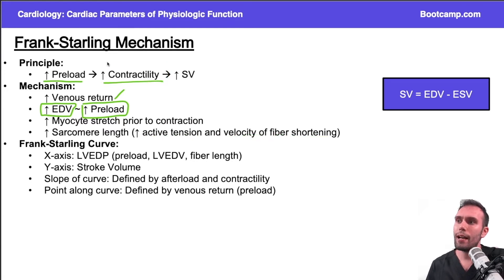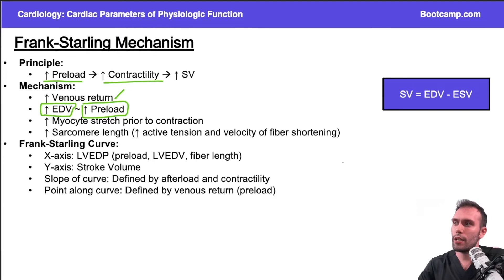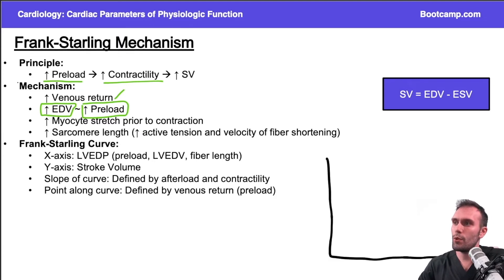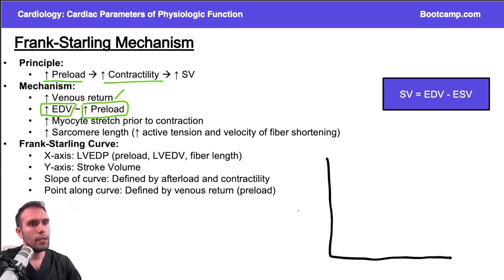There's more tension and more speed in the contraction, which causes the increase in contractility. That's how preload is related to contractility. The Frank-Starling curve goes out of its way to depict this, so let me give you an idea of what it looks like. If you understand the mechanism, it's not difficult to understand the curve. Let's put stroke volume on the y-axis.